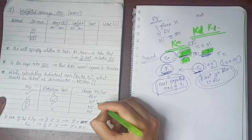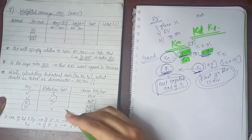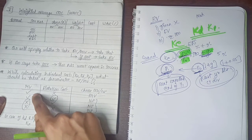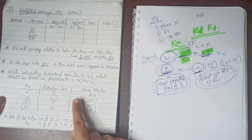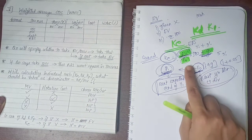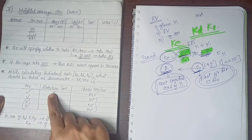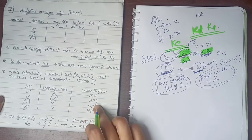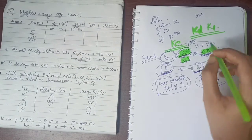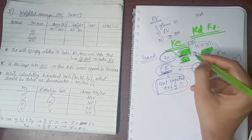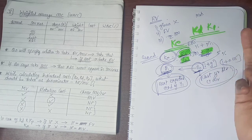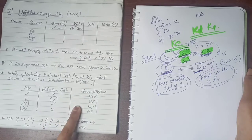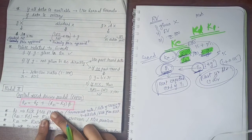For g: normally the growth rate is directly given. If not, use past trend data to find it. If past trend data is also not available, use g = b × r, where b is the retention ratio and r is return on equity — this formula is covered in another chapter. For P0: in most cases use net proceeds (NP). Use market value only when market value is given and flotation cost is not given.